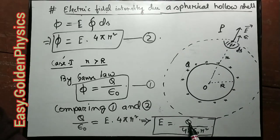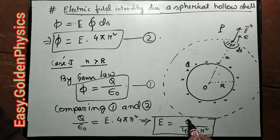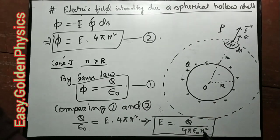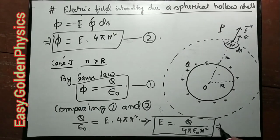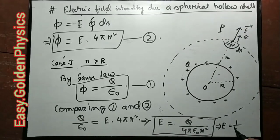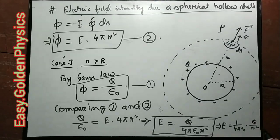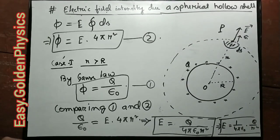Therefore E equals Q divided by 4 pi epsilon naught r squared. This is the equation for electric field intensity due to a spherical hollow shell. This matches the standard electrostatic equation: E equals 1 over 4 pi epsilon naught times Q over r squared.